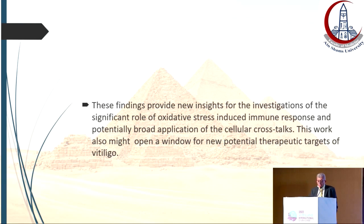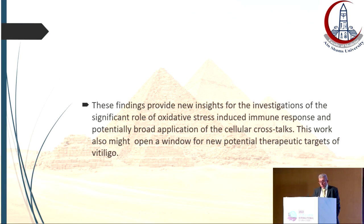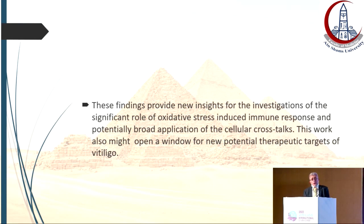These findings provide new insight into the significant role of oxidative stress, immune response, and potentially broad application of cellular crosstalk. This work might also open a window for new potential therapeutic targets of vitiligo, including the recently used antioxidants like adipose tissue secretome and quercetin, known to enhance the Wnt/β-catenin pathway, or the nano-drug delivery system.